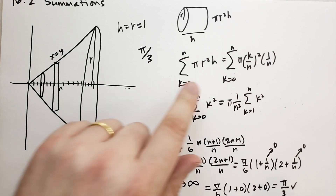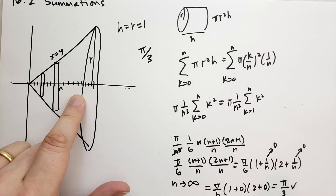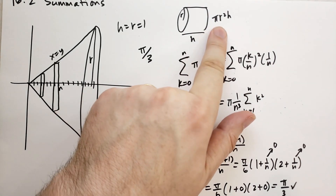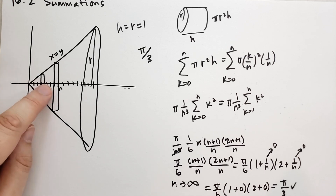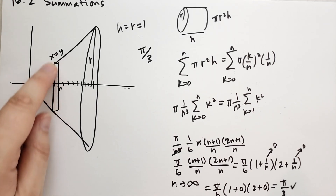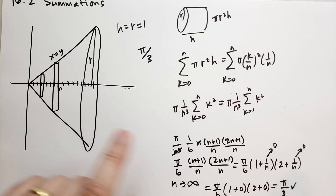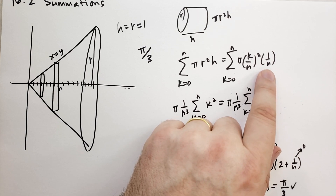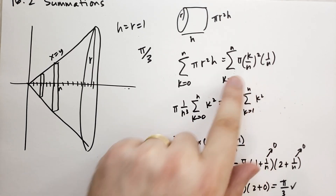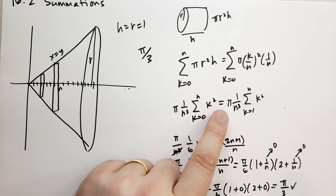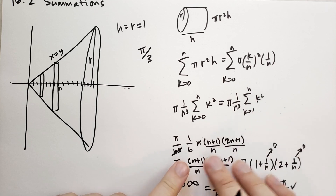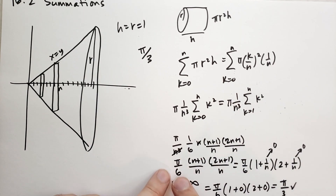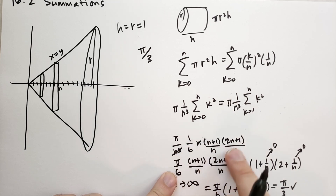Let's walk through the logic one more time. We slice up the cone into disks or cylinders. The volume of a cylinder is pi r squared h. So we add up n of these cylinders. The radius r is the distance from the origin, because we have the line x equals y, so that's k over n squared. The height of each disk is 1 over n. We pull out pi and n cubed to get the sum of k squared from k equals 1 to n, then use the result from exercise two to get pi over 3.